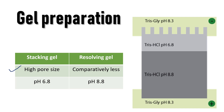Since the proteins are expected to separate on the basis of their mass, the resolving gel contains a higher concentration of acrylamide — meaning it has a comparatively smaller pore size, which is capable of retarding the movement of the proteins. Thus, the resolving gel is where the actual separation of protein molecules takes place.